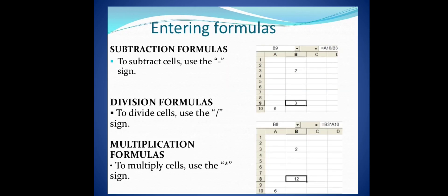Entering formula: subtraction formulas - to subtract cells use the minus sign. Division formula - to divide cells use the slash sign. Multiplication formula - to multiply cells use the star sign. When we put division in the formula, we put slash in the sign. When we put multiply in the formula, we put star in the formula.